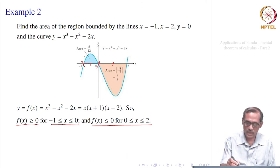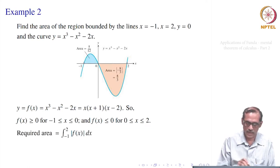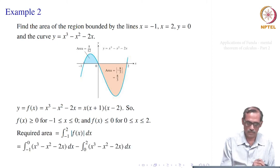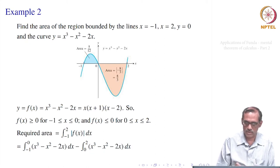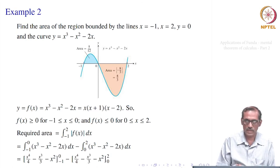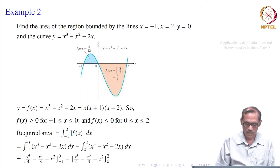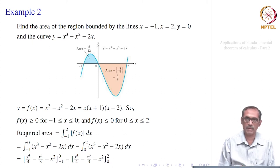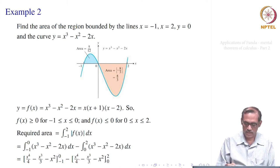We integrate using the fundamental theorem. The antiderivative of x³ - x² - 2x is x⁴/4 - x³/3 - x². Evaluating from -1 to 0: at 0 the expression is 0; at -1 it is 1/4 + 1/3 - 1 = -5/12. So the first integral gives 0 - (-5/12) = 5/12. For the second, we evaluate -(x⁴/4 - x³/3 - x²) from 0 to 2: at 2 it is 16/4 - 8/3 - 4 = -8/3, so the contribution is 8/3.